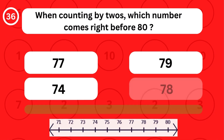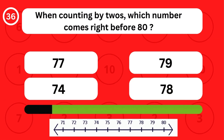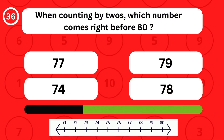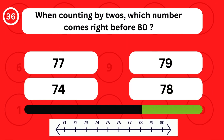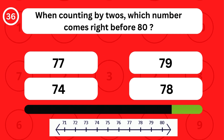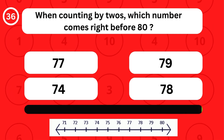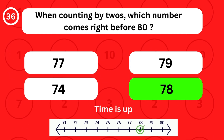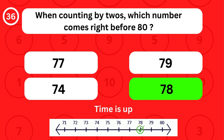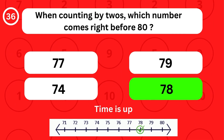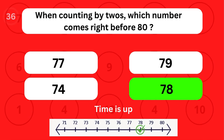When counting by twos, which number comes right before 80? When counting by twos, the number 78 comes right before 80.